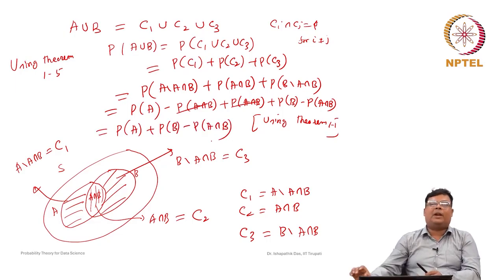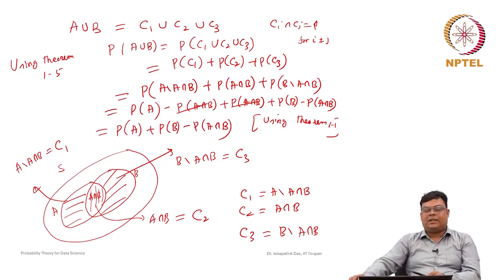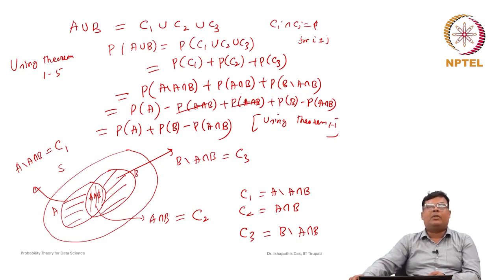This is one of the most important results in probability. There are many applications — if P(A), P(B), and P(A intersection B) are known, then we can find P(A union B) using this formula.